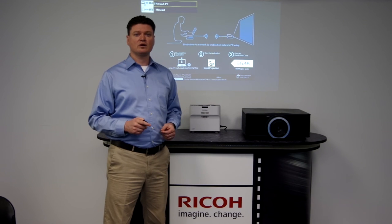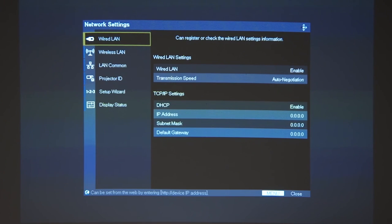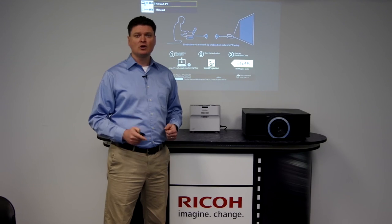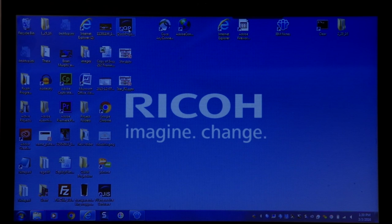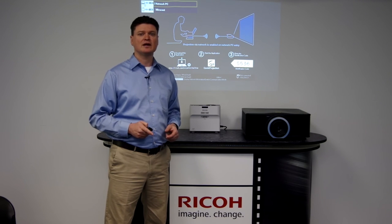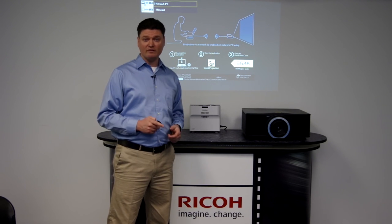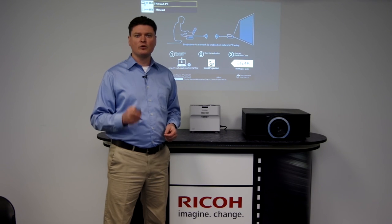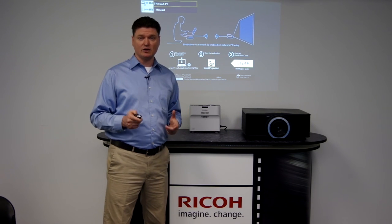Once your network interface is set up, back out of the menu and start the quick projection software. You will need to be logged into the computer as an administrator because the quick projection software will need to make temporary adjustments to the computer's Wi-Fi functions. The software will prompt you to enter the projector's ID code.